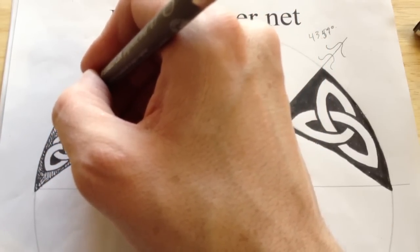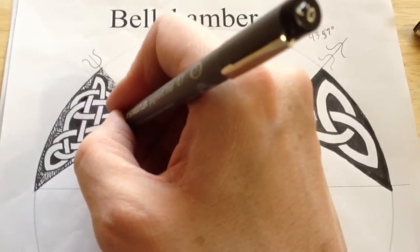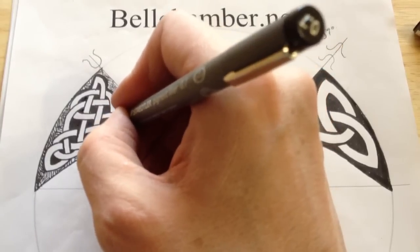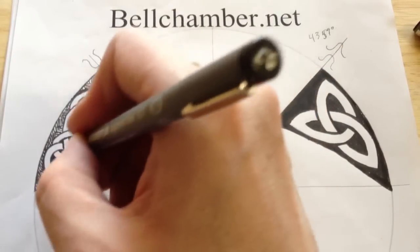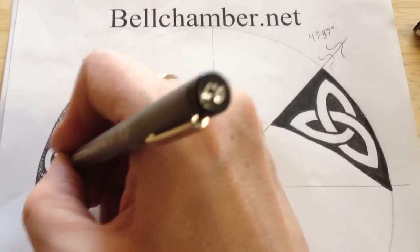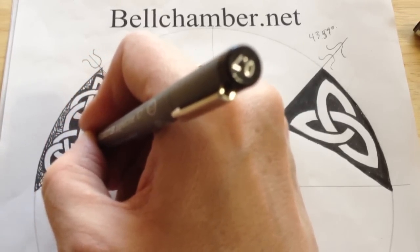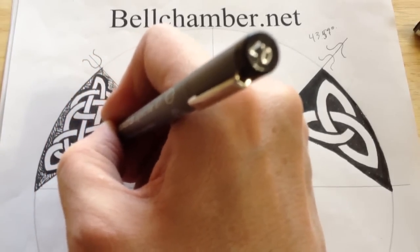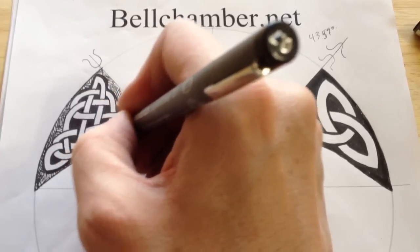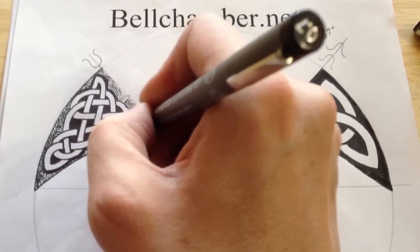Now that we've got the inside of the negative space darkened, then we want to make the intersections where the ribbon goes over and under. We want to clean those up.